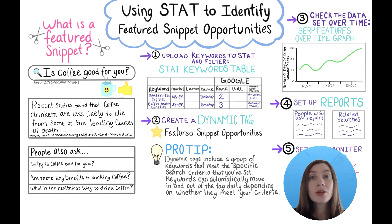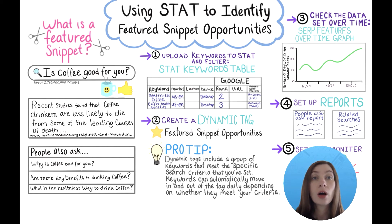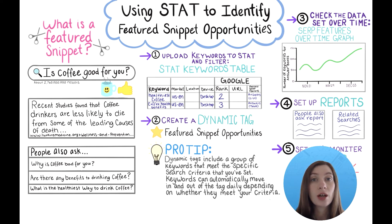So what is the next step to prioritise your featured snippet opportunities by the highest potential ROI keywords? It's usually much easier to take a featured snippet — or to steal one — if you're also on page one. Taking a look at STAT's SERP feature tab can help out here.